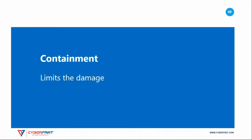Your first priority should be containing the damage caused by the incident. You want to limit the future activity of the attacker so that they cannot do further damage to the confidentiality, integrity, and availability of your systems or networks. There are three primary activities you can perform to contain the damage of a security incident: segmentation, isolation, and removal.